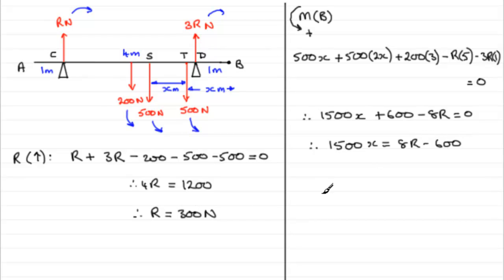Now we know what R is, it's 300, so we've got 1,500X equals 8 times the 300, so that's going to be 2,400. And take away that 600, it's going to be 1,800. So to get X, divide both sides by 1,500. And if you work this out, it comes nicely to X equaling 1.2, 1.2 meters in this case. So we could summarize and just say therefore Tom is 1.2 meters from B.